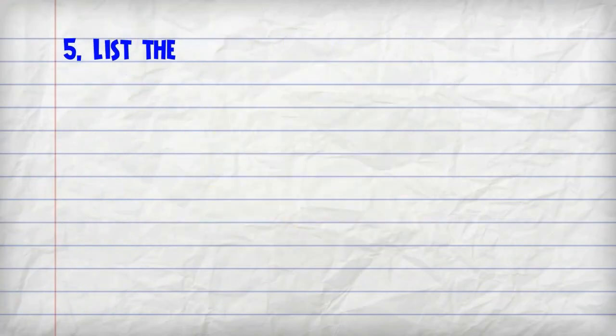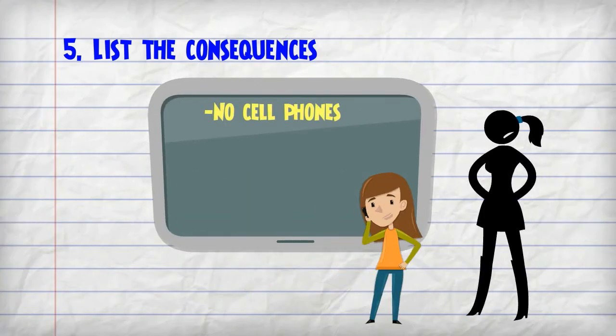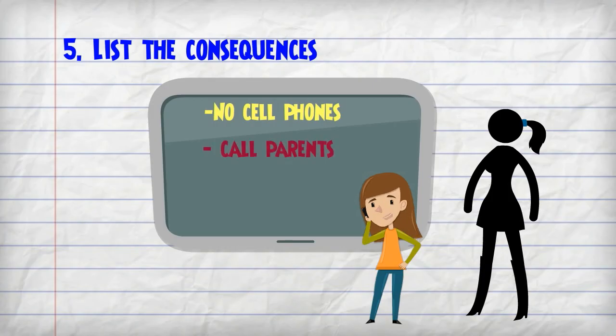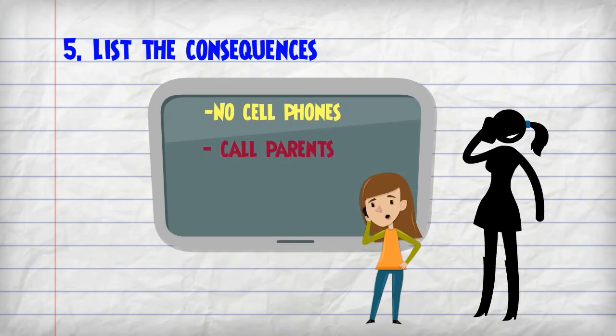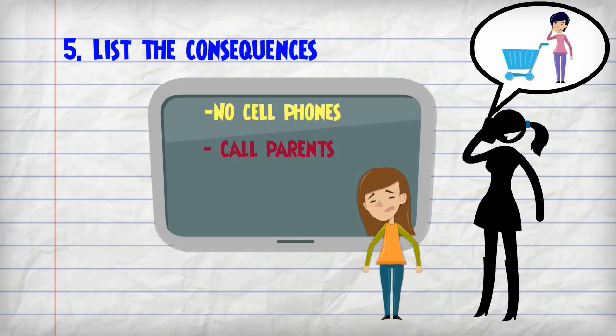The fifth rule is list the consequences. Let the students know what happens when they break the rules. Always be prepared to enforce the rules. If a student brings a cell phone to class and the consequence is calling the parents, then call the parents.